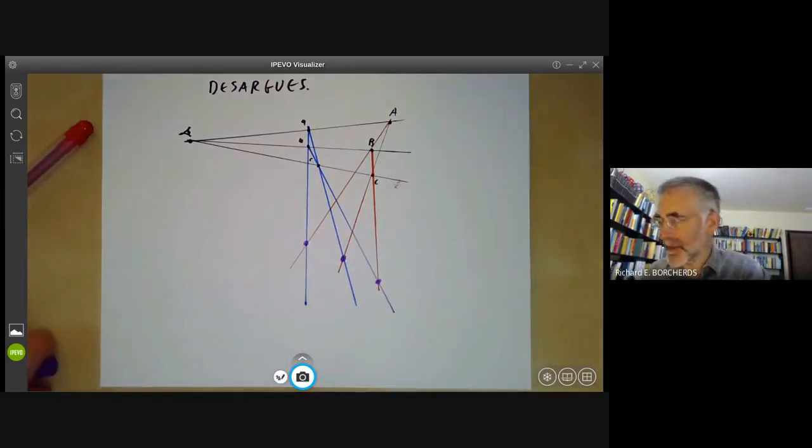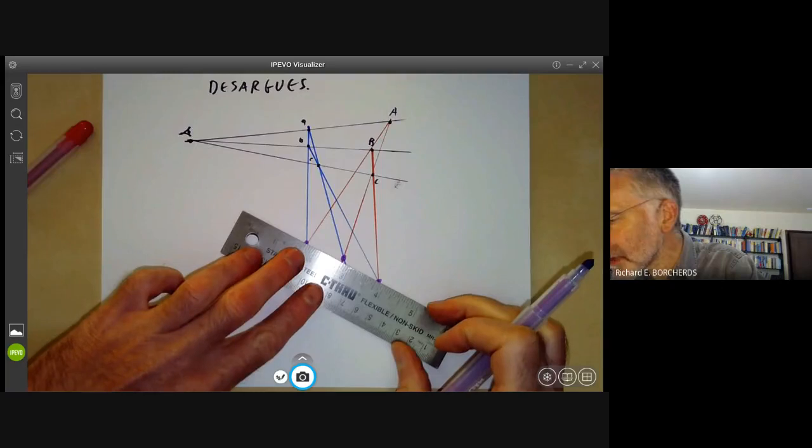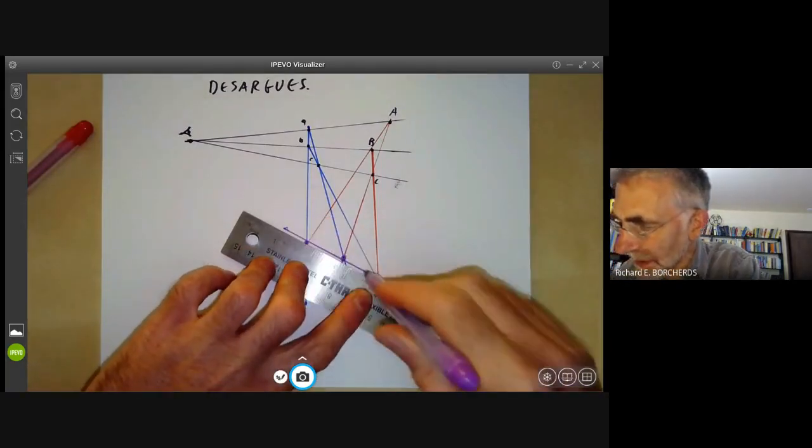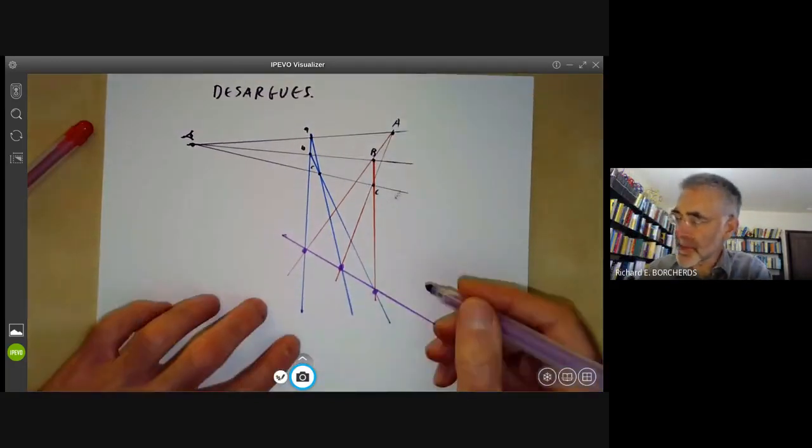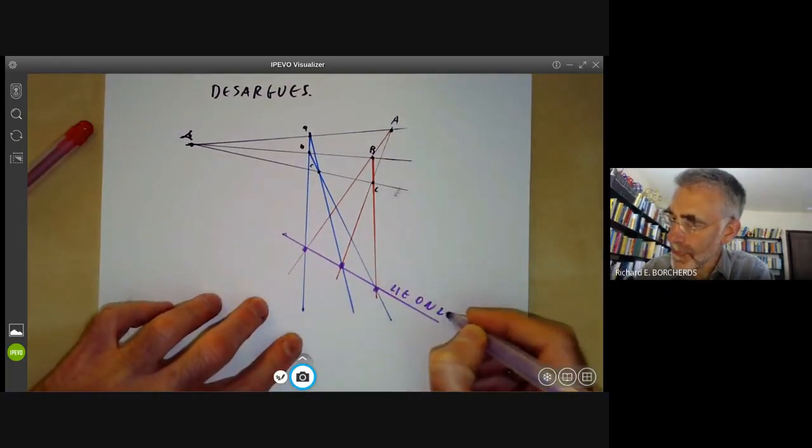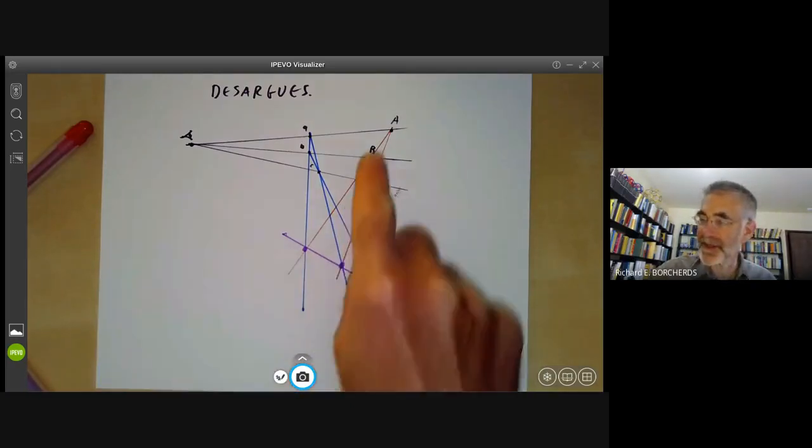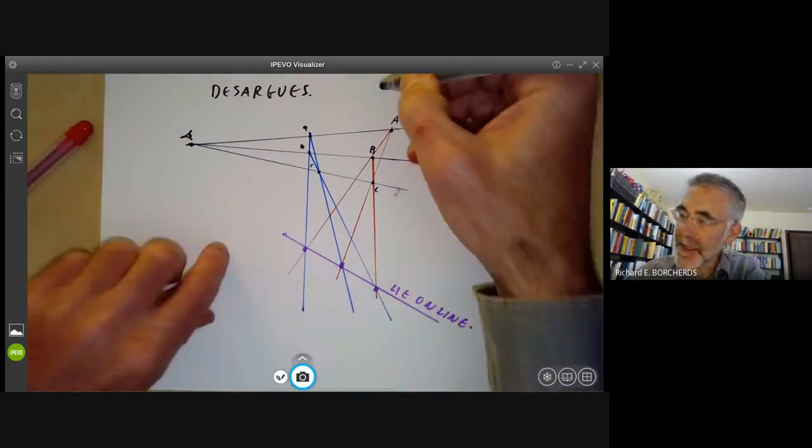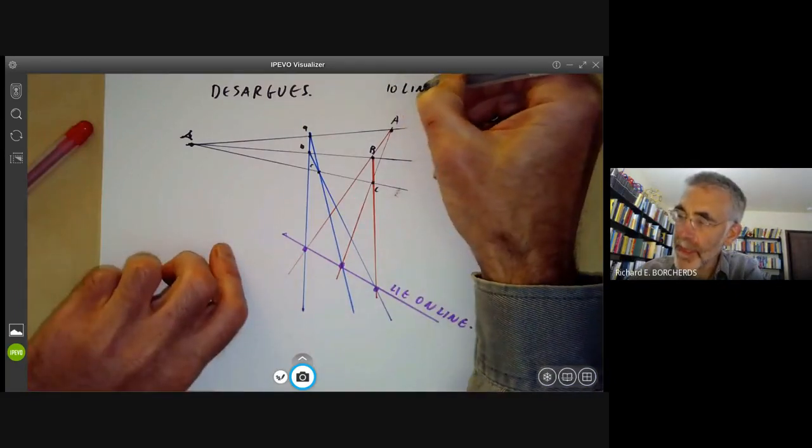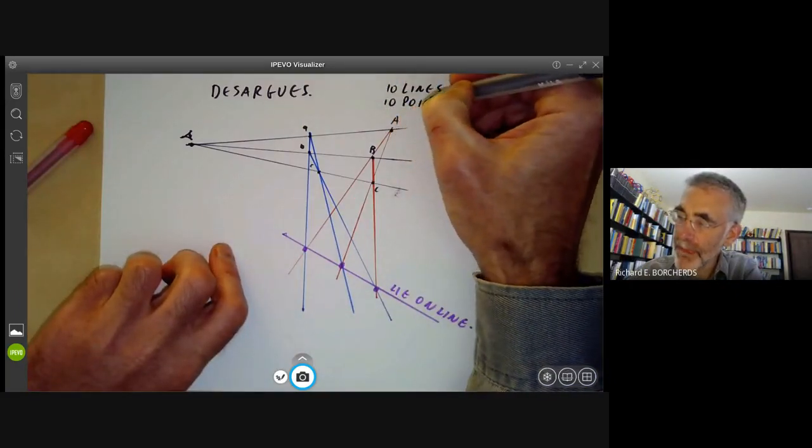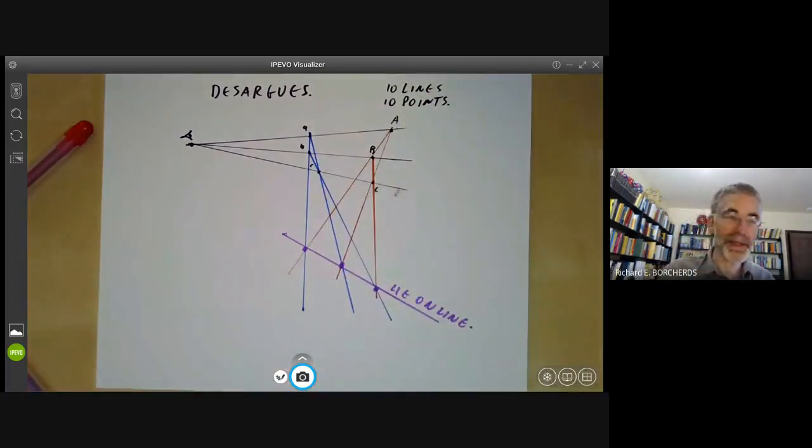And Pappus' theorem says that these three points lie in a straight line, which they don't quite in this case because I haven't drawn them very accurately. So these points lie on a line. So this theorem, Pappus' theorem has nine lines and nine points. Desargues' theorem has ten lines and ten points. So this configuration of ten lines and ten points is sometimes called Desargues' configuration. And so why is Desargues' theorem true?